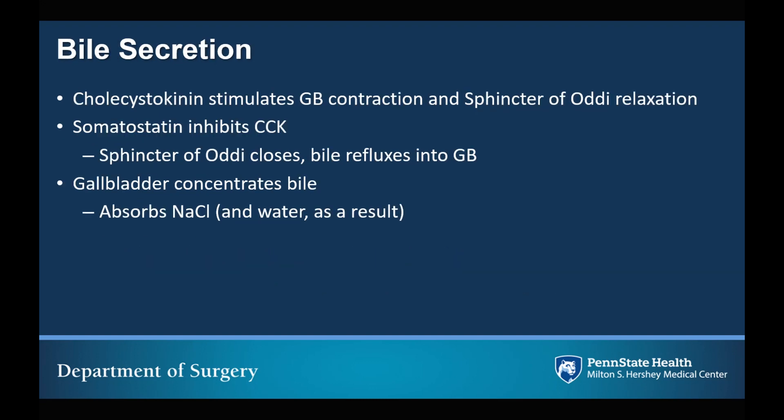Bile secretion is controlled by CCK, or cholecystokinin, which stimulates the gallbladder to contract and the sphincter of Oddi to relax. Somatostatin has an inhibitory effect on CCK, resulting in the sphincter of Oddi closing with bile refluxing into the gallbladder. The primary function of the gallbladder is to store and concentrate bile, which is accomplished through the absorption of sodium chloride, with water following via passive diffusion as a result.